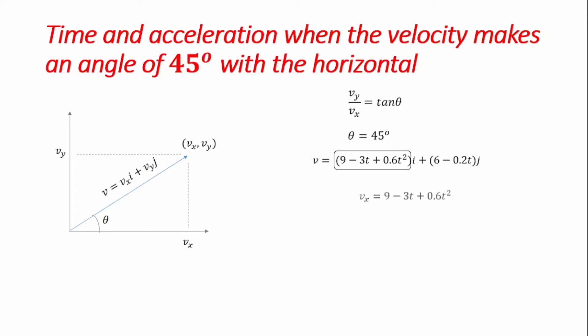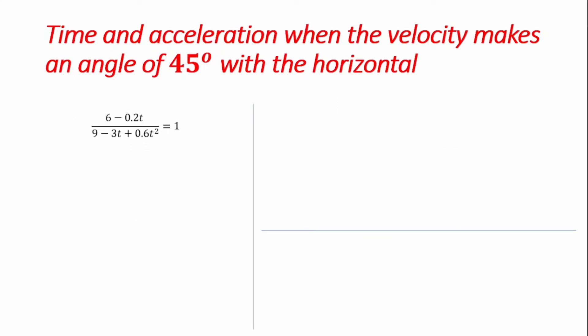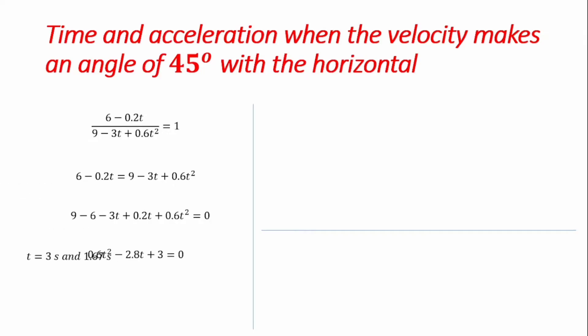We have our values for Vx and Vy from our velocity equation. Substituting into the equation Vx/Vy = tan(45°) = 1, and simplifying, we form a simple quadratic equation. Solving this quadratic using any standard method gives us two values of time: t = 3 seconds and t = 1.67 seconds. These are the two times at which the velocity of the particle makes an angle of 45 degrees with the x-axis.